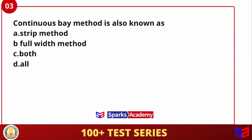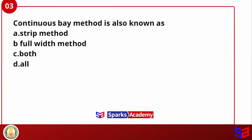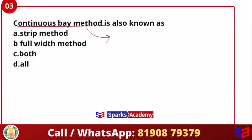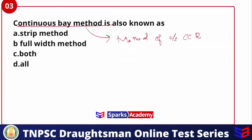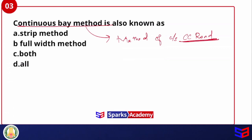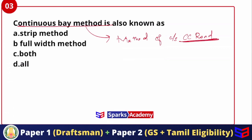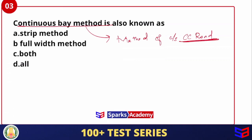The Continuous Bay Method is also known as Canyor's Bay Method — it is a method of construction of cement concrete road. Among the options — Strip Method and Full Method — the answer is that Continuous Bay Method is also referred to as the Canyor's Bay Method, so the answer is option C.